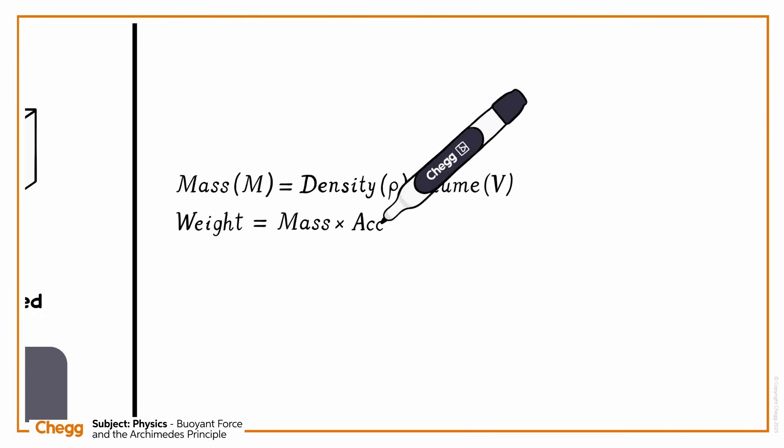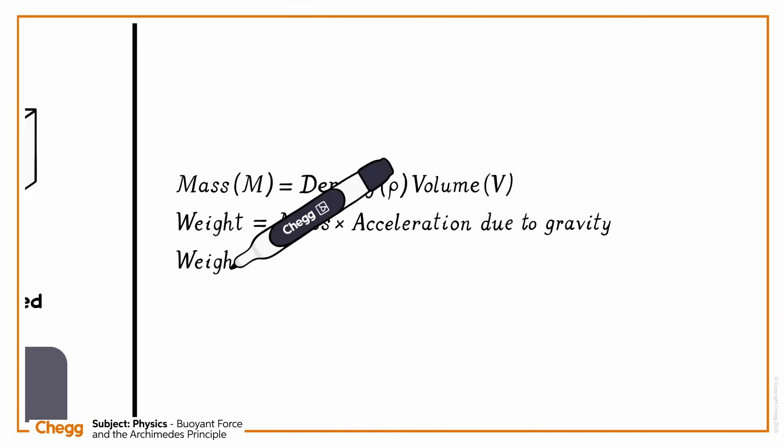Since we know weight is mass times acceleration due to gravity G, we can say that weight is equal to rho times V times G.